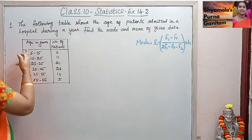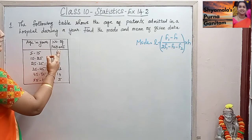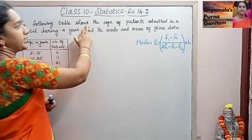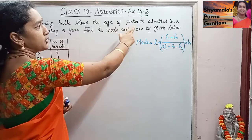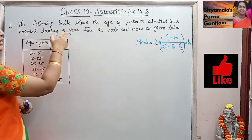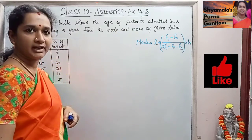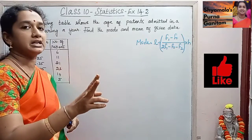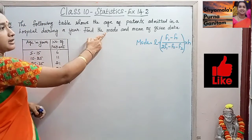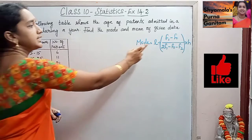The question shows age in years and number of patients. The data shows the age of patients admitted in the hospital during a year. We are asked to find both the mode and mean of the given data. First we will calculate mode using this formula.